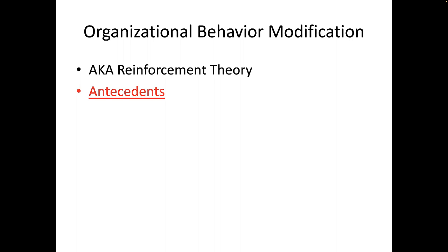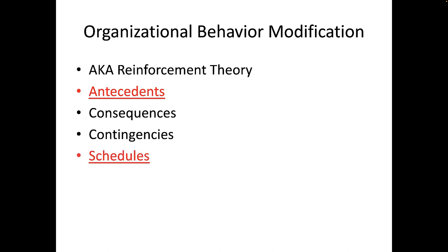There are some key terms to know. First, an antecedent is an event that precedes a behavior — it's not a cause of behavior, but it can be a cue. Second, a consequence is what follows a behavior and influences future behaviors. Third, a contingency is a type of consequence applied with the hopes of influencing future behaviors. Fourth, a reinforcement schedule is the issue of exactly when we apply the consequence, which has a huge impact on future behavior.